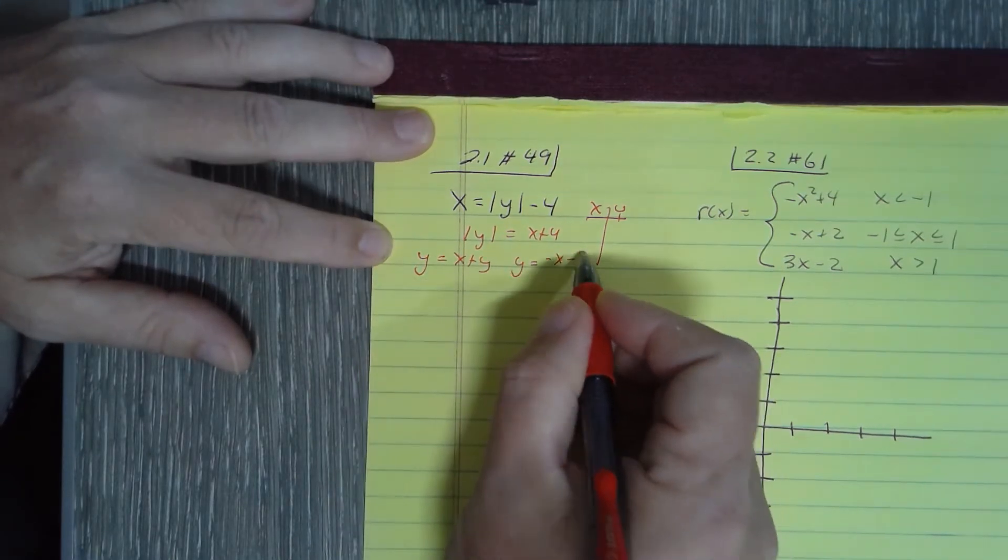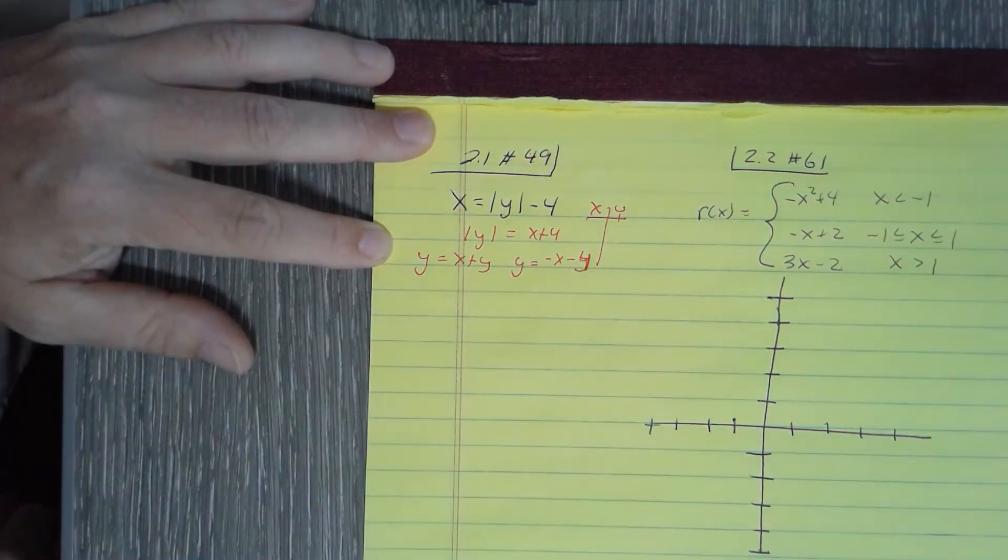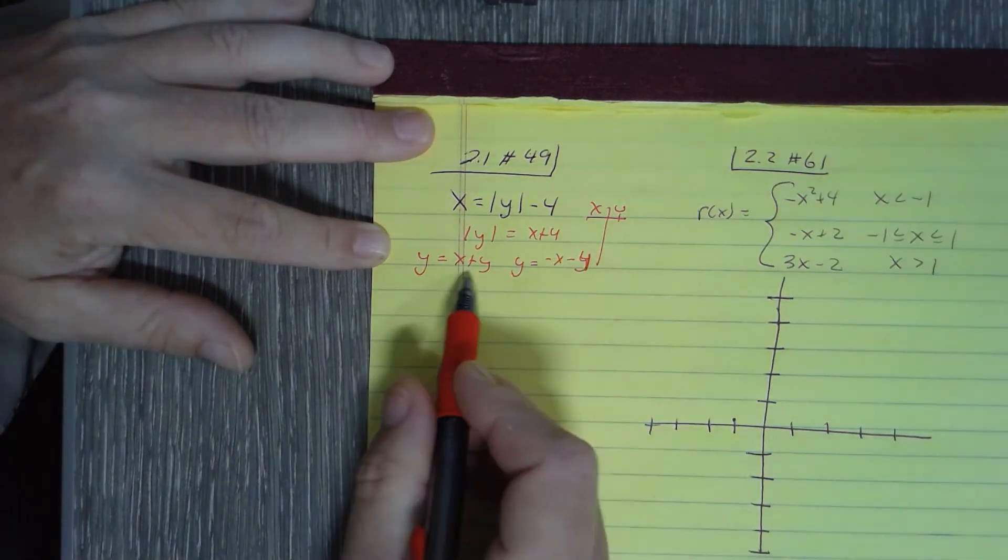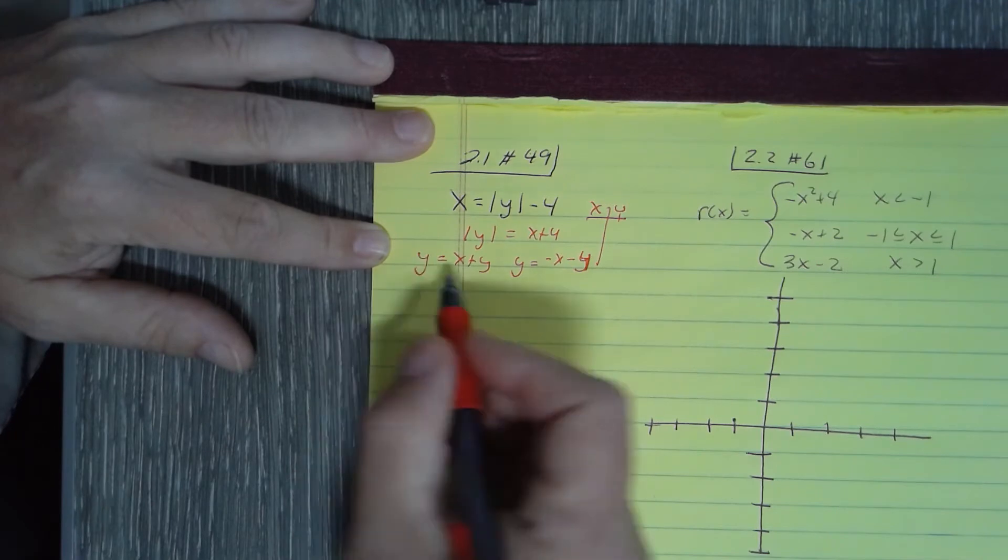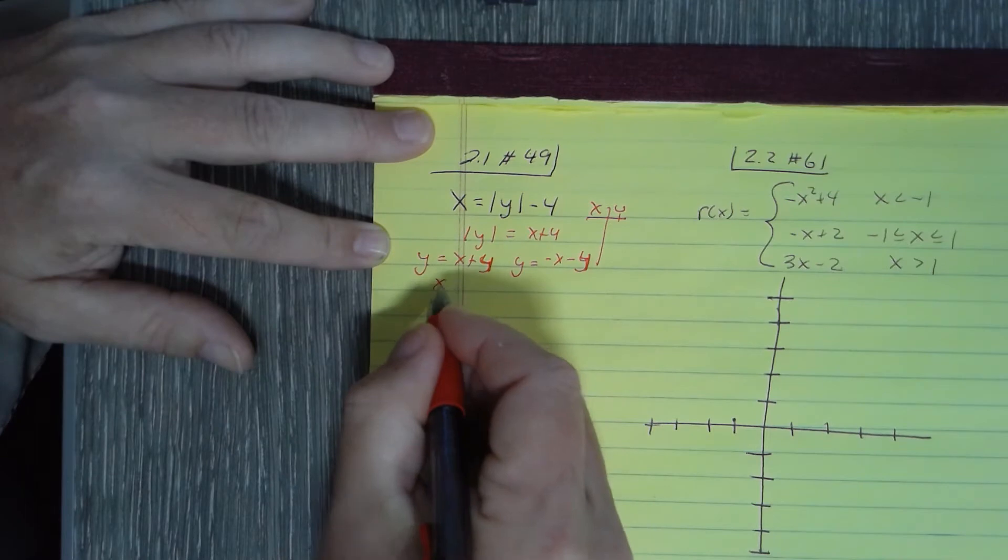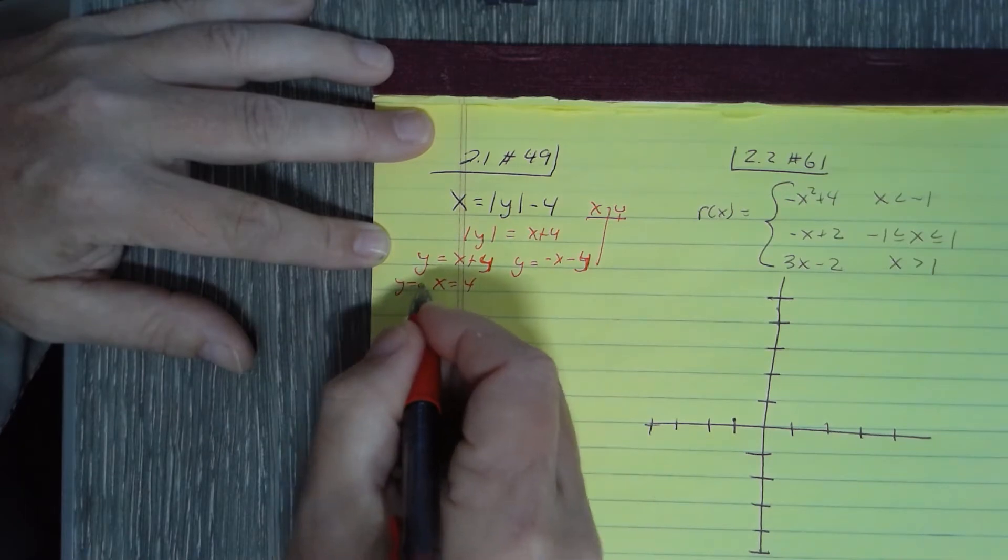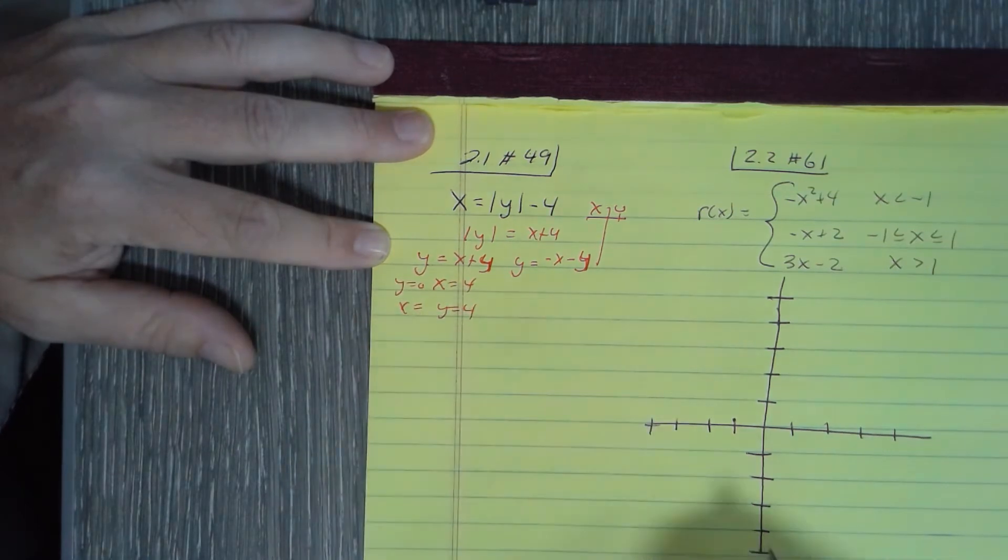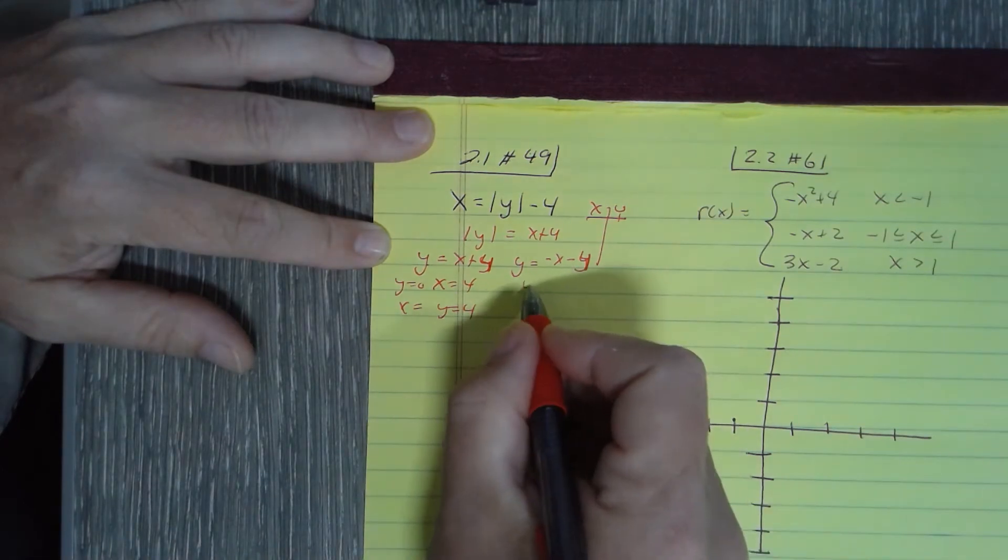Oops, that's a 4 not a y. Okay, so x-intercept happens when y equals zero. These should be fours not y's. So when y equals zero, x equals negative 4. When x equals zero, y equals 4.